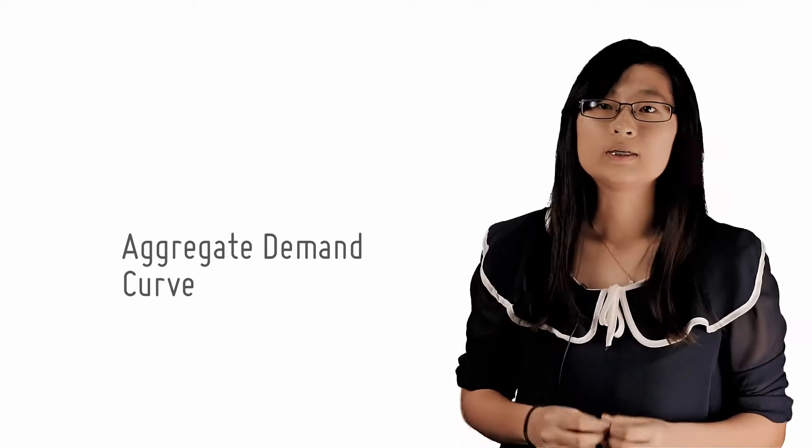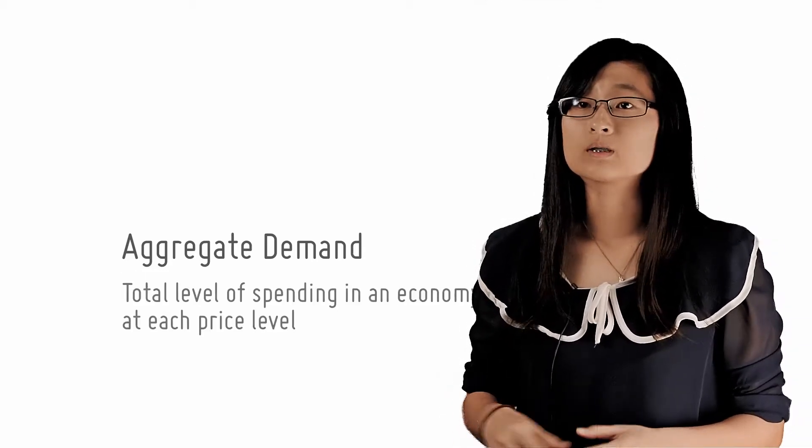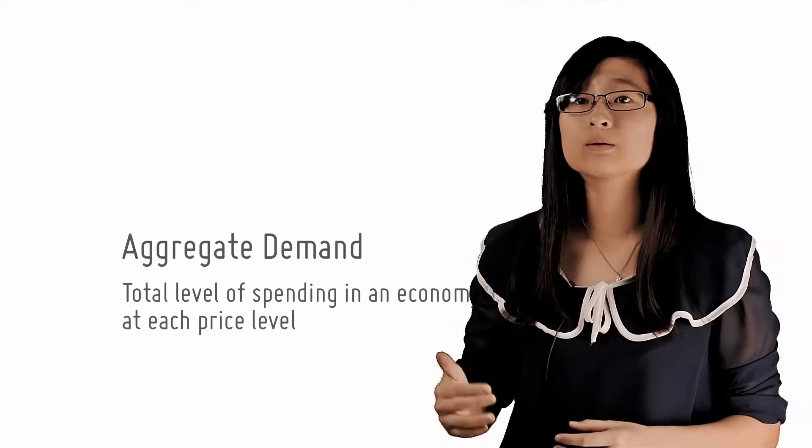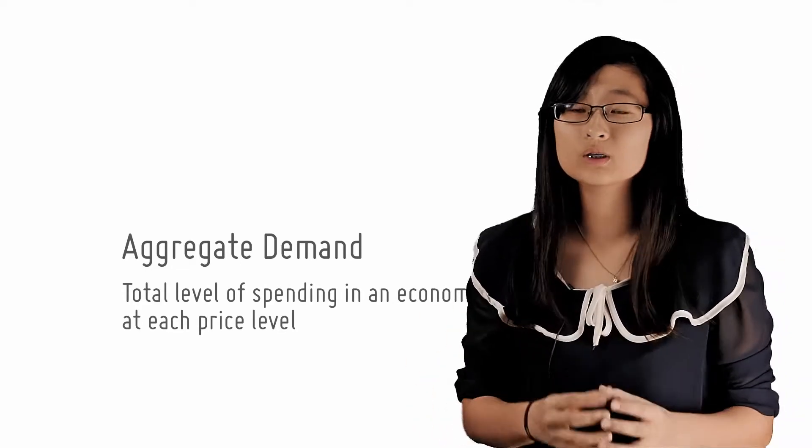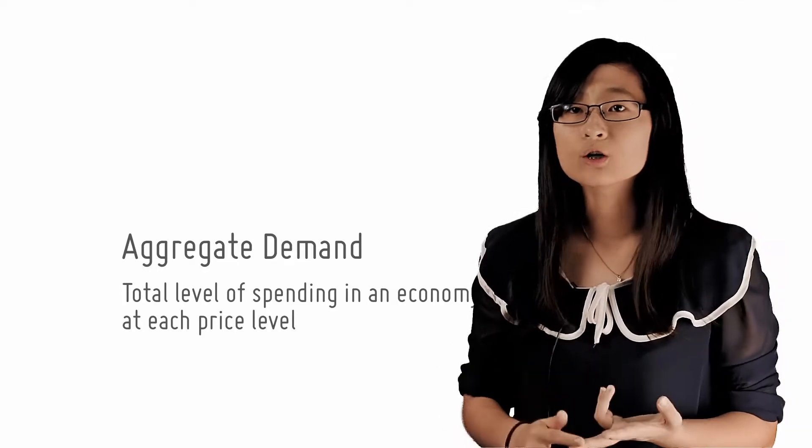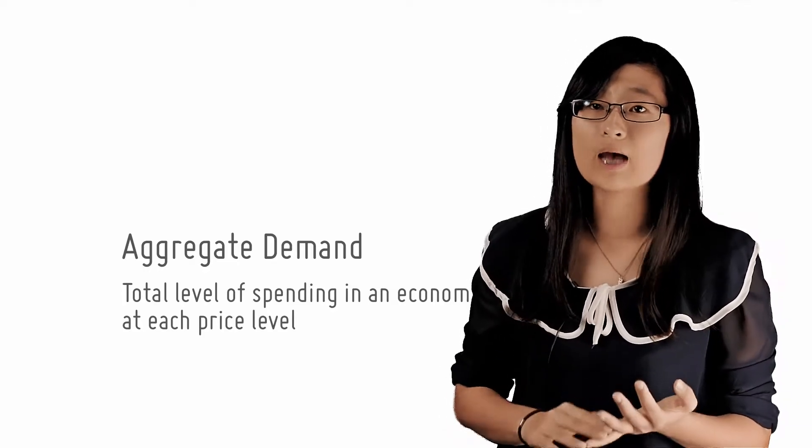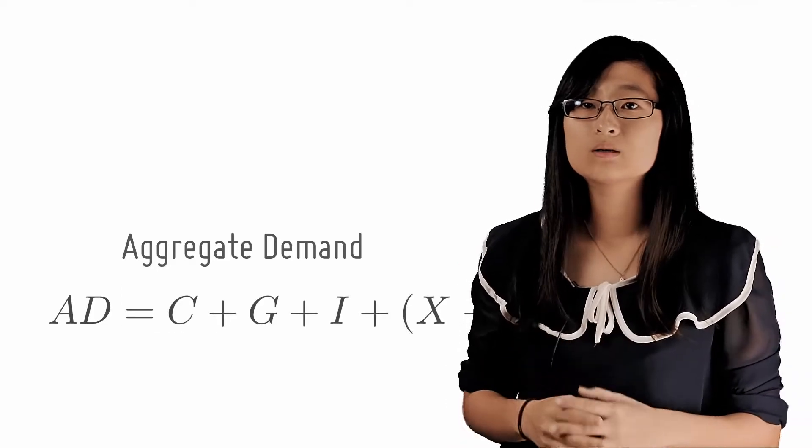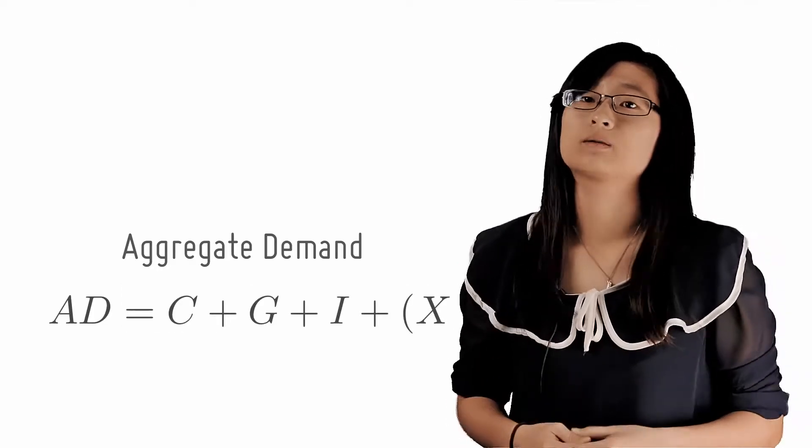In this lesson, we'll learn about the AD curve. Aggregate Demand refers to the total level of spending in an economy at each price level and it shows the amount of domestically produced goods and services that households, firms, the government and foreigners desire to buy at each general price level. So that's AD equals C plus G plus I plus X minus M.